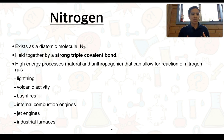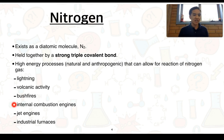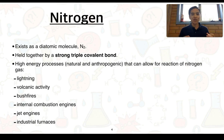When we talk about high energy processes, we're talking about things like lightning, volcanic activity, bushfires, internal combustion engines, jet engines, and industrial furnaces. These will generally provide the right conditions to break that strong triple covalent bond and allow nitrogen to react when normally it wouldn't in other conditions.